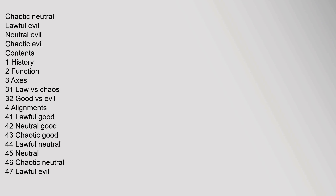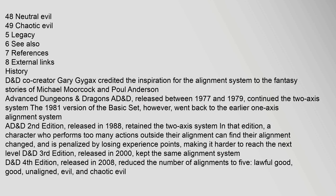In the Dungeons. Contents: 1 History, 2 Function, 3 Axes — 3.1 Law vs Chaos, 3.2 Good vs Evil; 4 Alignments — 4.1 Lawful Good, 4.2 Neutral Good, 4.3 Chaotic Good, 4.4 Lawful Neutral, 4.5 Neutral, 4.6 Chaotic Neutral, 4.7 Lawful Evil, 4.8 Neutral Evil, 4.9 Chaotic Evil; 5 Legacy, 6 See Also, 7 References, 8 External Links.